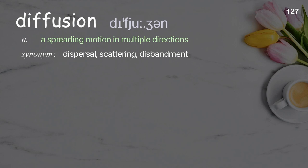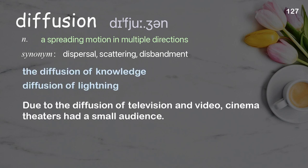Diffusion. A spreading motion in multiple directions. Examples: the diffusion of knowledge, diffusion of lightning. Due to the diffusion of television and video, cinema theaters had a small audience.